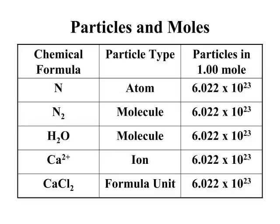Don't confuse a mole with the particle that you're actually measuring. You can have moles of atoms — if you're talking about nitrogen — moles of molecules, moles of more complex molecules, moles of ions, or for ionic compounds, moles of formula units. No matter what the particle type is, if you have one mole of it, you have 6.022 times 10 to the 23rd of those things. The mole is the number; the particle type is separate from that.